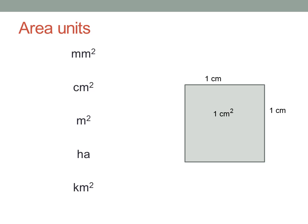Now, how many millimetres is one centimetre? It's ten millimetres. Label both sides. Now multiply the smaller units to get the area in square millimetres. One square centimetre is the same as one hundred square millimetres.